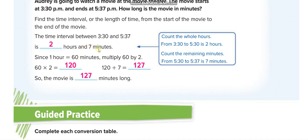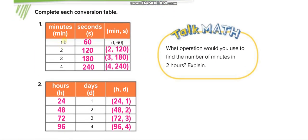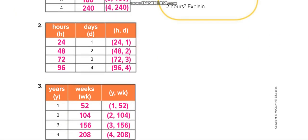In the conversion table: 1 minute is 60 seconds, 2 minutes is 120 seconds, 3 minutes is 180 seconds, 4 minutes is 240 seconds. For hours into days: 1 day is 24 hours, so 2 days is 48 hours, 3 days is 72 hours, 4 days is 96 hours.